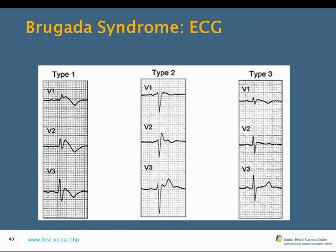There are three types of Brugada syndrome. Type 1 is the most important and is characterized by the cove-type ST elevation in V1–V3. Types 2 and 3 show less convincing ECG patterns but will still prompt referral to electrophysiology for further workup. Patients with type 2 or 3 presenting in the emergency department will be referred to an electrophysiologist.